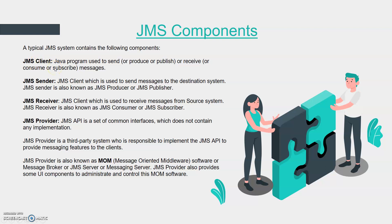First of all we have something called a JMS client. A client is simply a Java piece of code — a Java program. You can make use of this Java program to send a message or to receive a message. For example, you can create a client in application A to send a message to application B. When a program is used to send, produce, or publish a message, those terms mean the same thing — it's a program that generates a message.